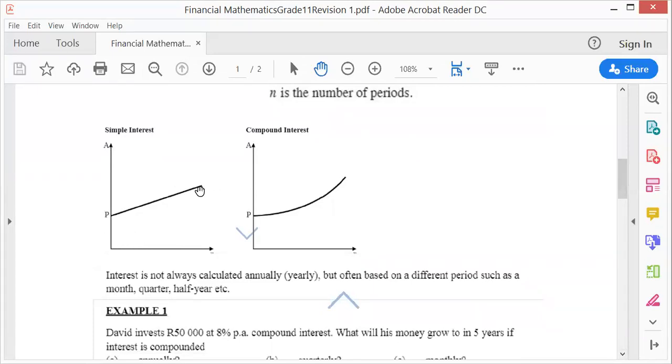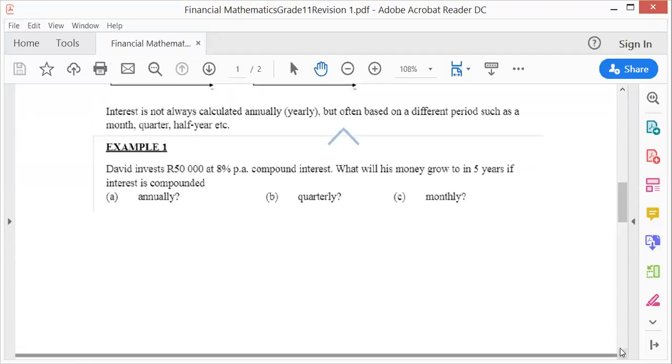Simple interest is linear - it's a straight line, not exponential. Compound interest is exponential, so it will be a curve. Interest is always calculated annually, but it can also be calculated monthly, quarterly, or yearly. Let's look at the first example.